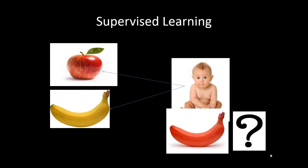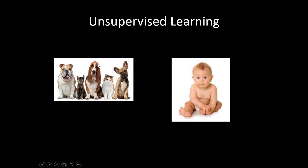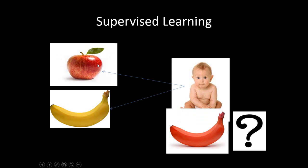Let us try to understand how a small baby learns things. Say for example, we have shown the baby two pictures. One is the picture of an apple and the other one is the picture of a banana.